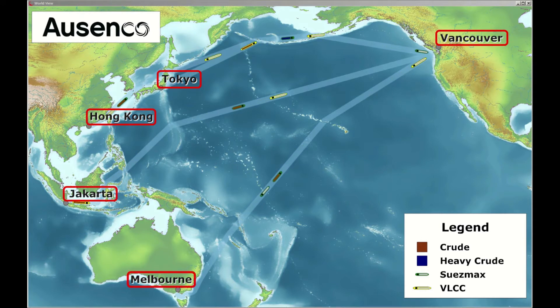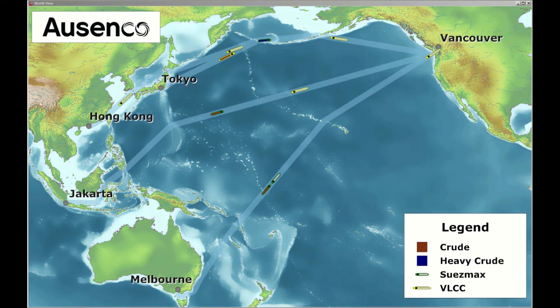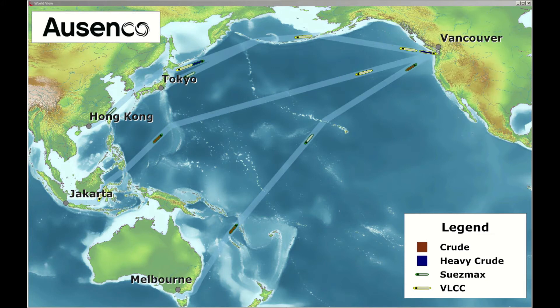A fleet of 12 very large crude carriers and 9 Suez Max tankers was used in this demonstration.